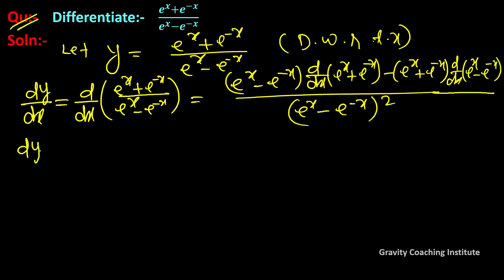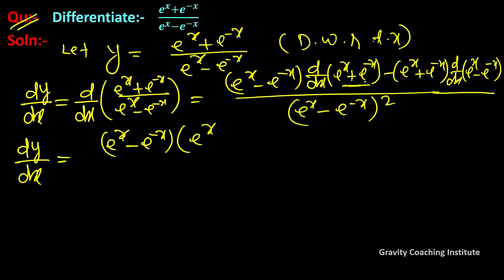So dy/dx = [(eˣ - e⁻ˣ) × differentiation of (eˣ + e⁻ˣ)] — eˣ का differentiation eˣ होगा, और e⁻ˣ में chain rule use होगा, तो e⁻ˣ का differentiation e⁻ˣ × (−1) = −e⁻ˣ। So the differentiation of (eˣ + e⁻ˣ) gives (eˣ − e⁻ˣ)।